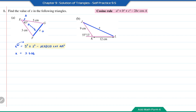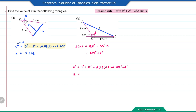Question B: x is opposite this angle here. So first we need to find the angle JKL, which is equal to 180 degrees minus 55 degrees 13 minutes, giving 124 degrees 47 minutes. So x squared equals 9 squared plus 12 squared minus 2 times 9 times 12 cos 124 degrees 47 minutes. Therefore x equals 18.66 cm.